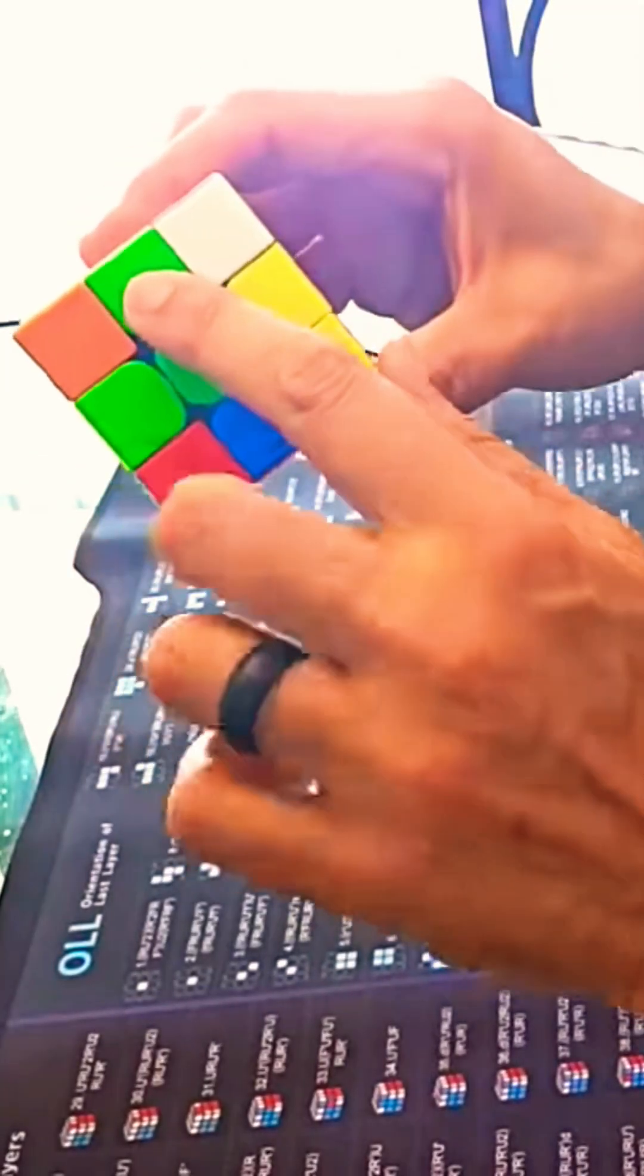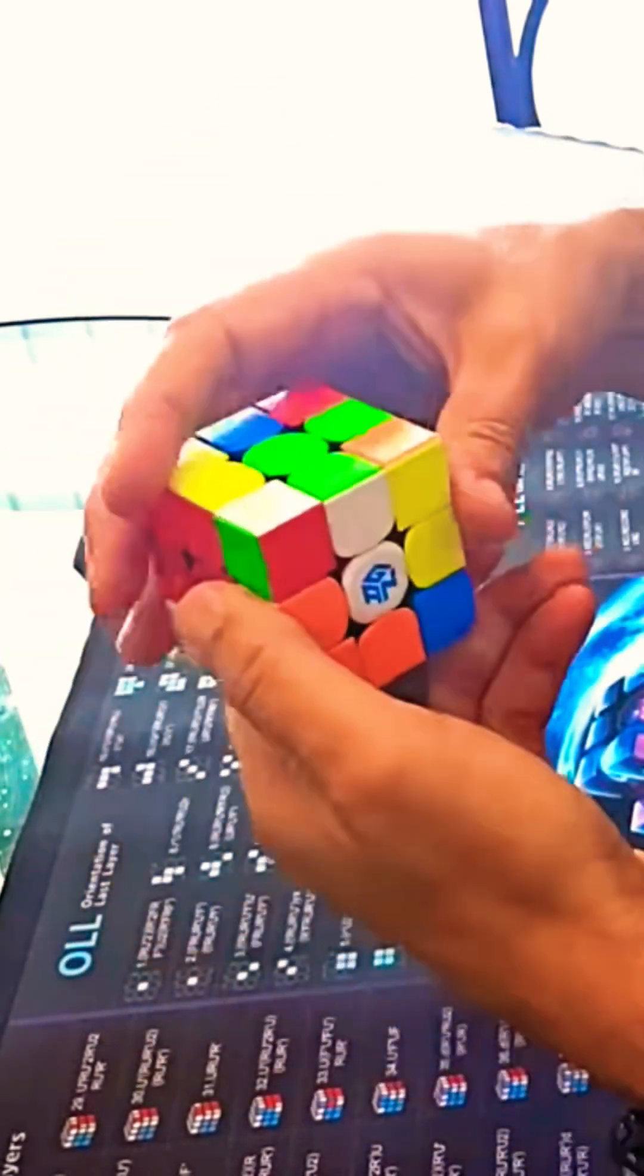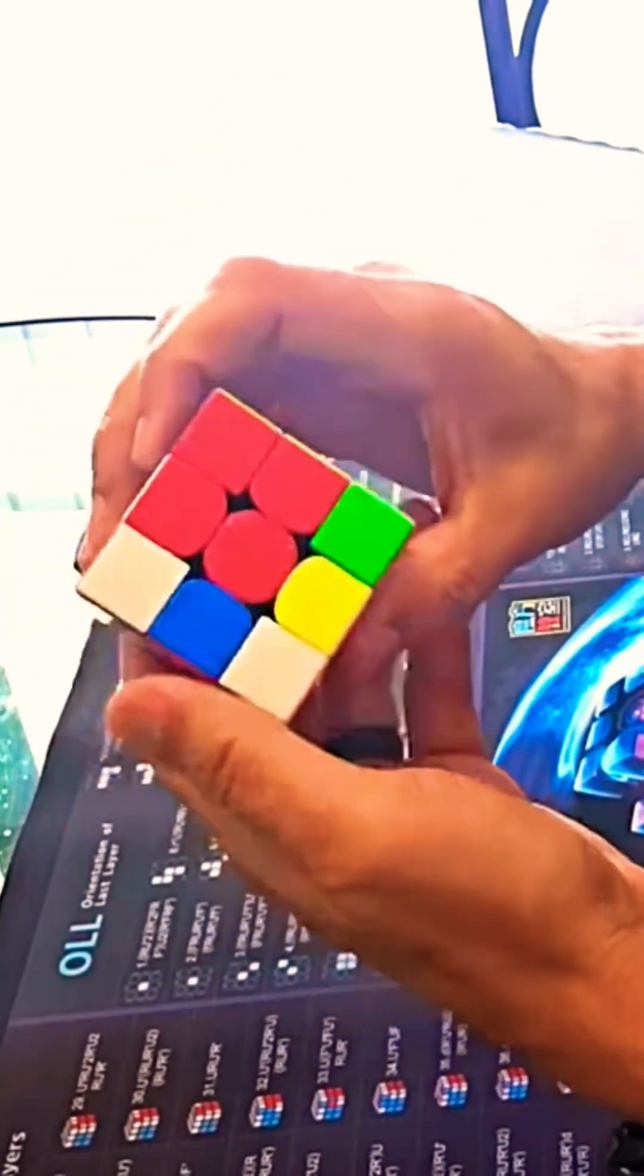Forming a cross at the bottom of the Rubik's Cube. Now you got to match the edge with the center. Once you do that, you can twist it all the way down. Bring it down here. Red already there, I can twist it all the way down.